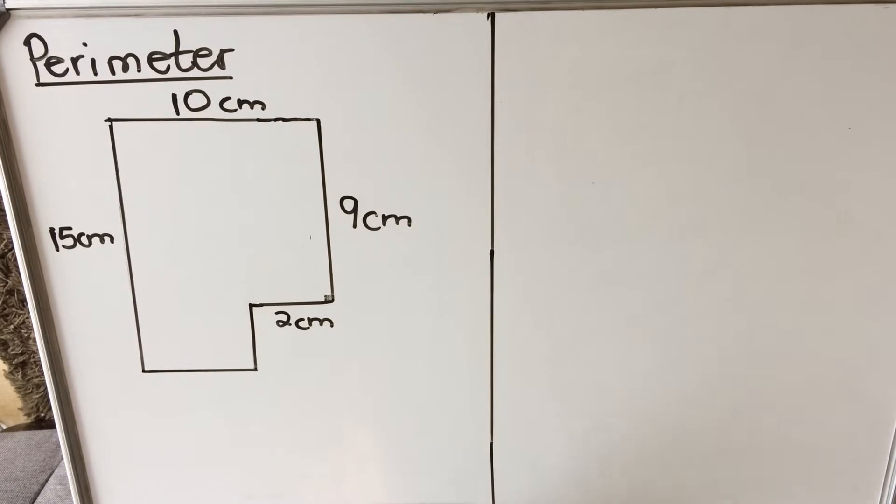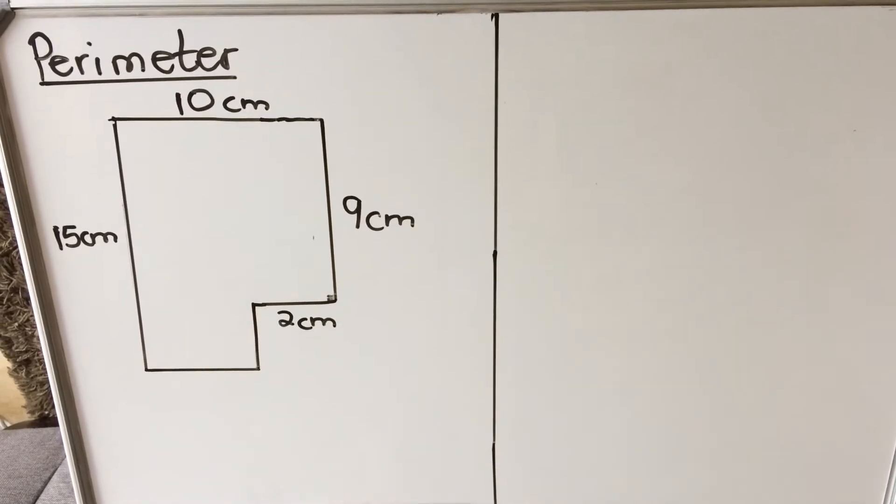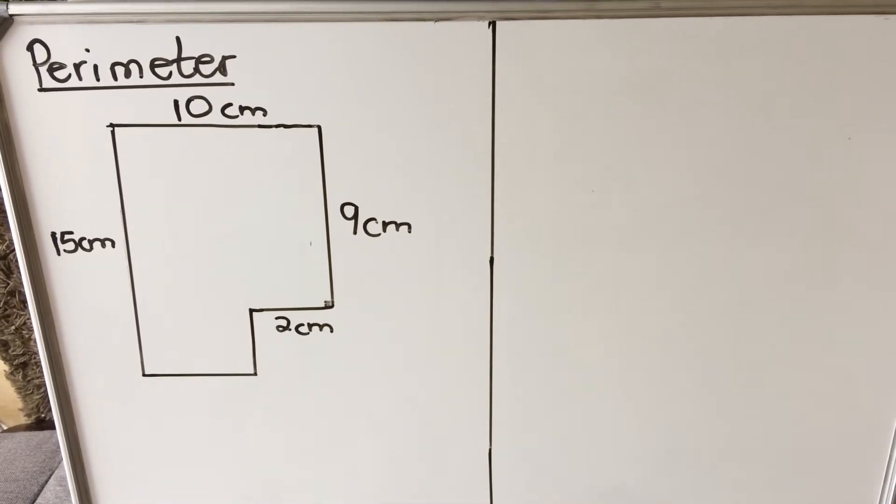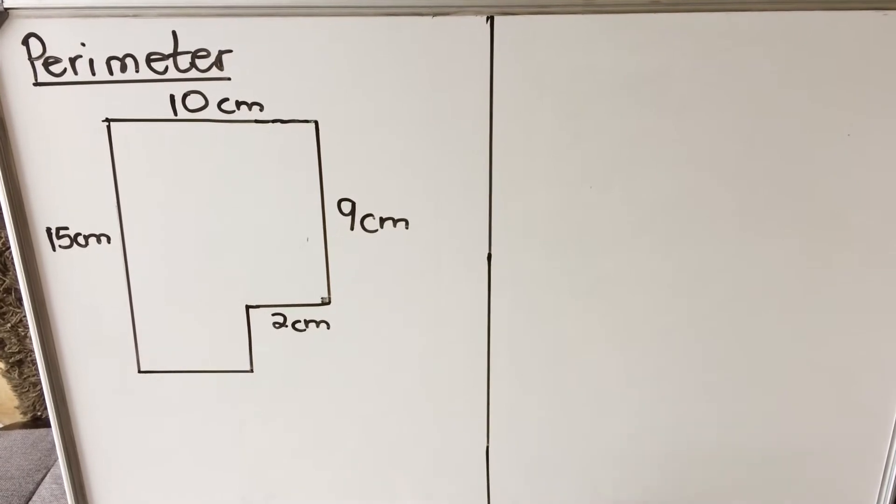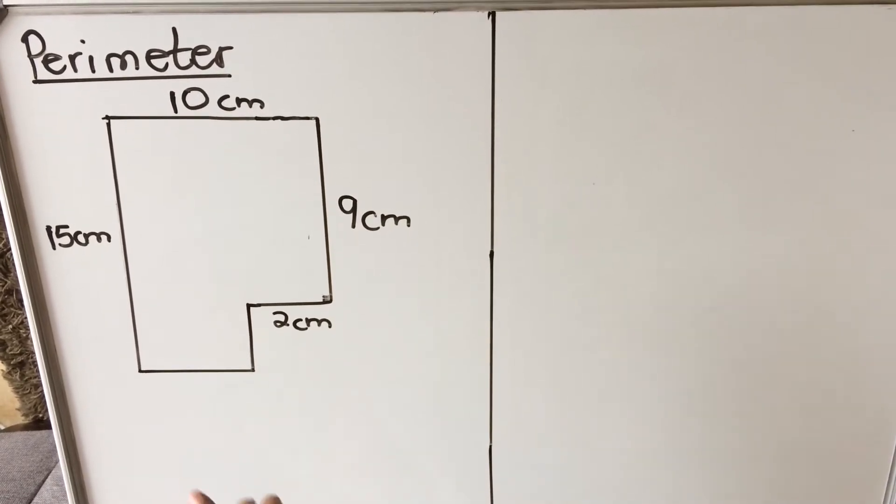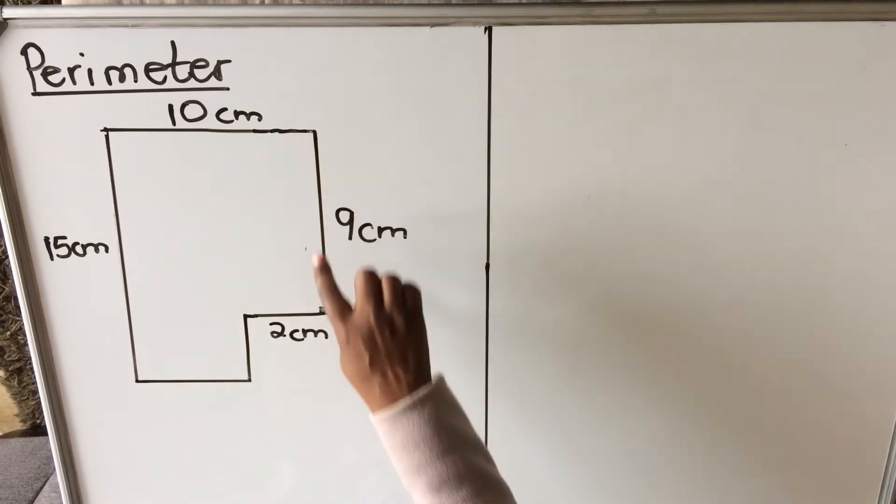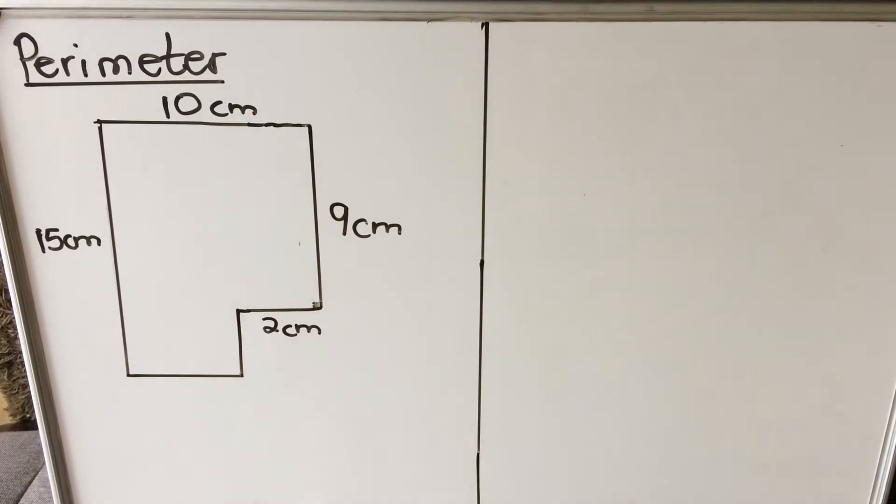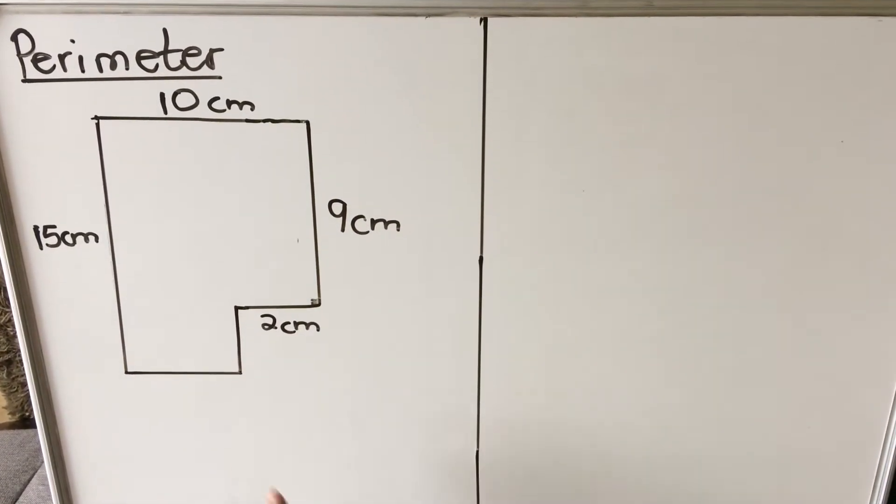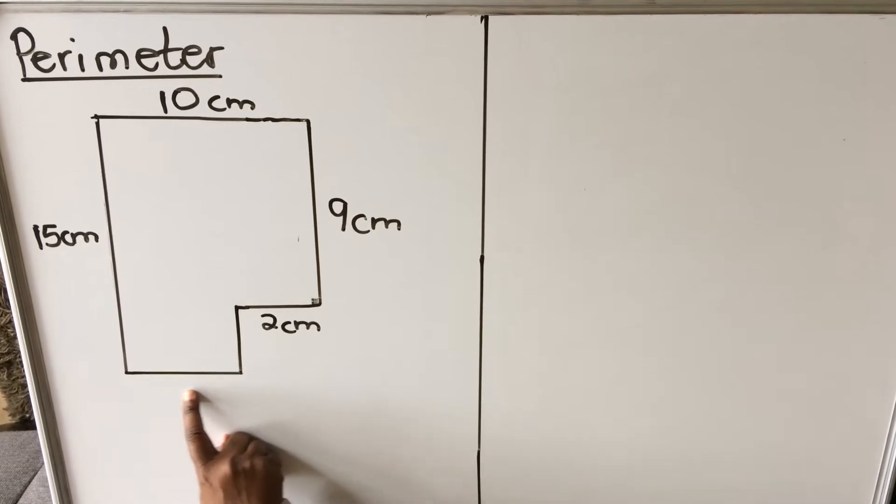When you calculate perimeter of a shape like this, perimeter is the distance around the object, so you're going to add all of these around the object. But the problem with this question is we don't have the value here.